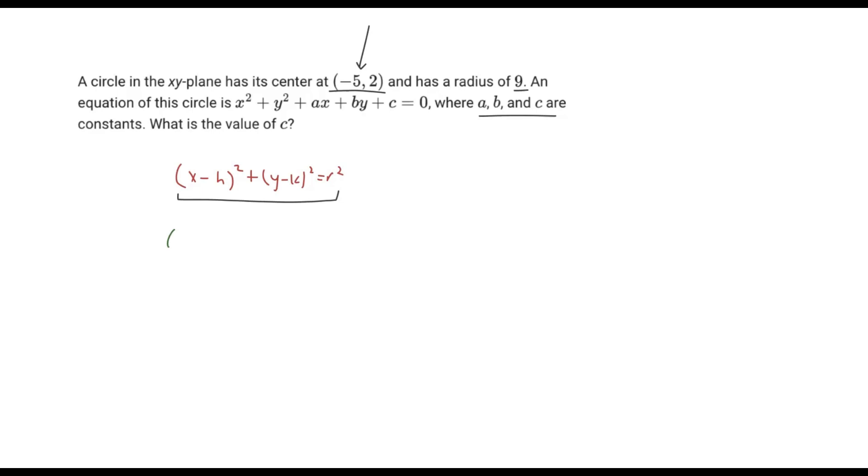Here we'll have x, and because we have a negative 5, and the standard form here is a negative, in reality h here is negative 5. So if you take a negative of a negative, that's in reality just positive. So x plus 5 here is going to be squared, plus y minus k—k here is just positive 2—squared equals the radius squared. The radius we know is 9, so 9 squared is 81.